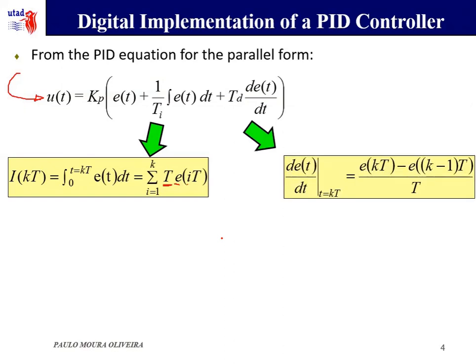Regarding the derivative part, that is simple. We can use an interpolation from the error in the sample K minus the error in the sample K minus one, divided by the sampling time.